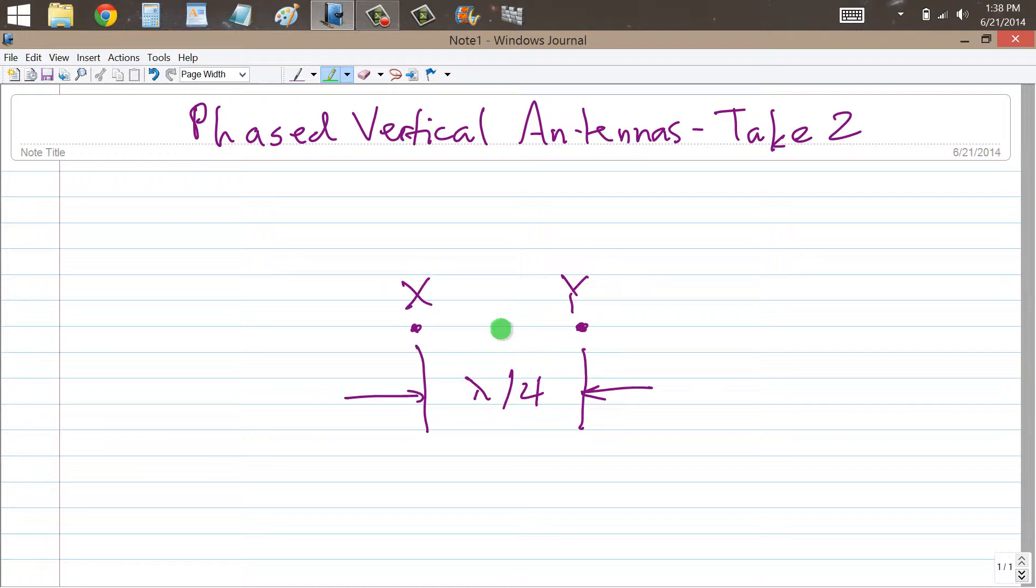Consider again two quarter wavelength high vertical antennas over perfectly conducting ground or over real ground with so many radials that it's perfectly conducting for all intents and purposes. But suppose that this time, instead of separating them by one half wavelength in free space,